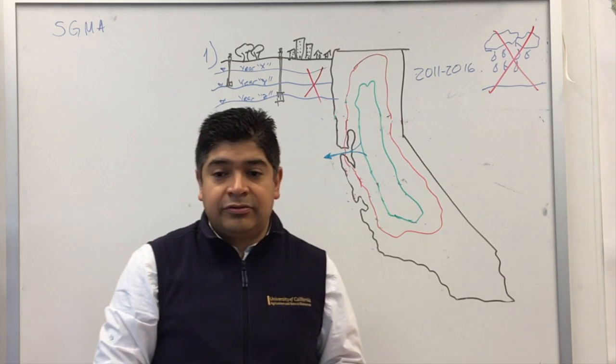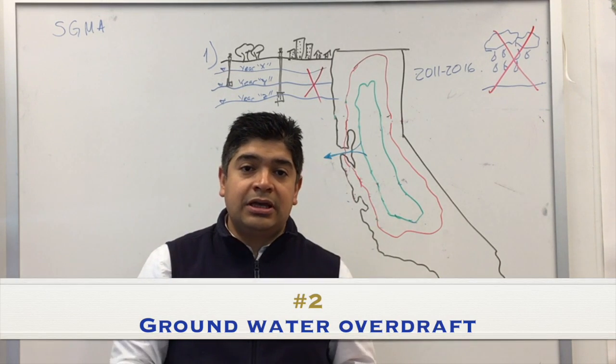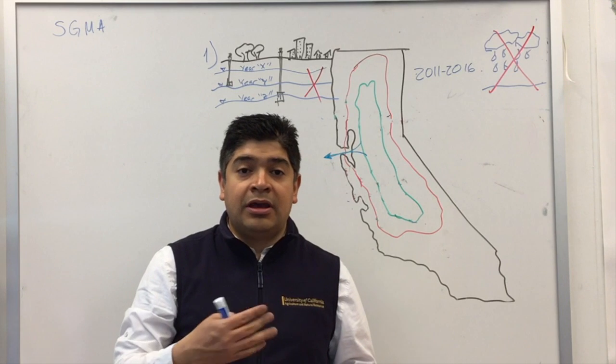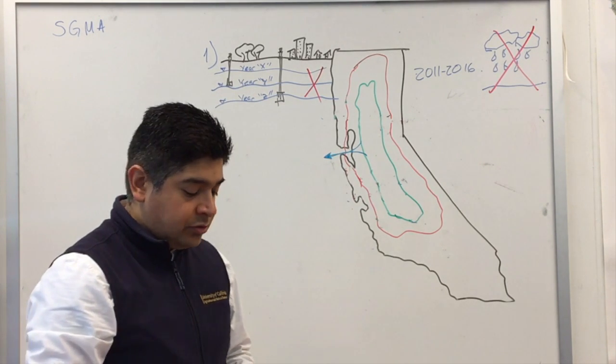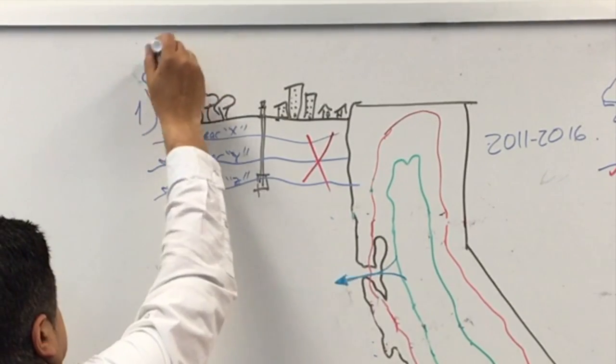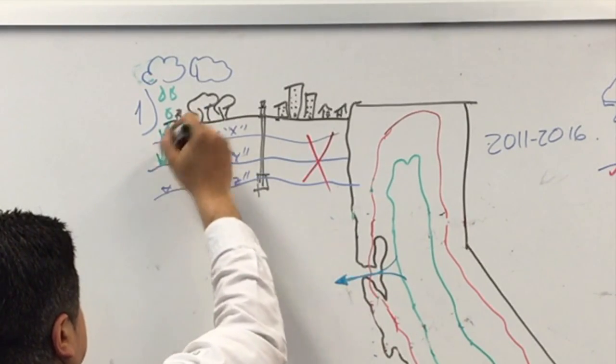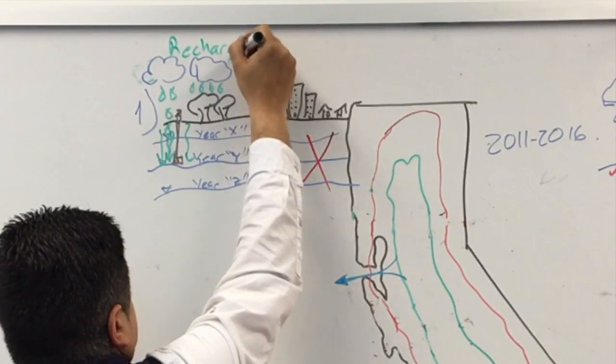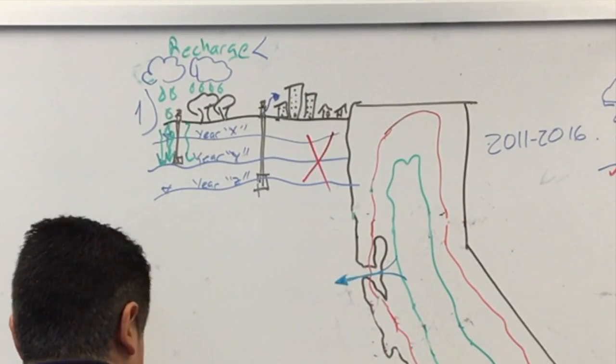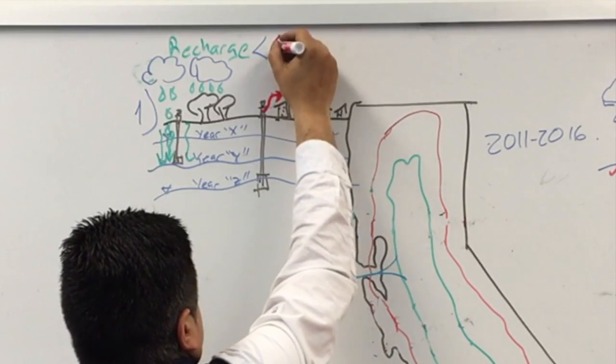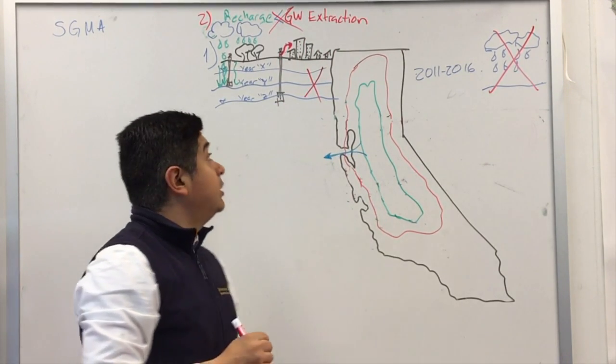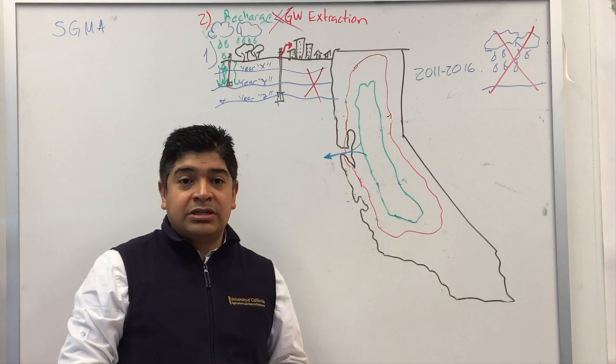Second undesirable result, that is referred to as unreasonable reduction of groundwater, or in this case, groundwater overdraft. What does that mean? It means that more water is taken out of the aquifer than the water that is recharged into the aquifer. So it's just preventing that the recharge is less than the groundwater extraction.